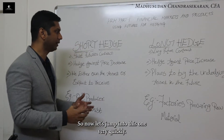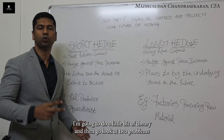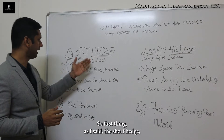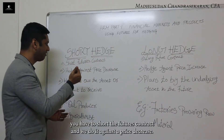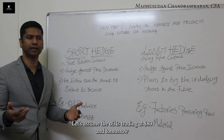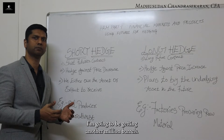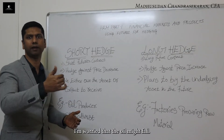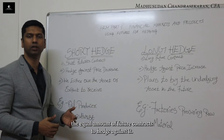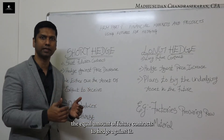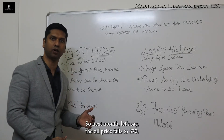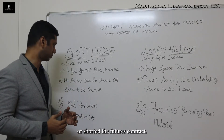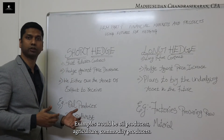Let's jump into this quickly. I'm going to do a little bit of theory and then look at two problems to explain this concept. First, the short hedge — you have to short the futures contract and we do it against a price decrease. Let's assume oil is trading at $80. In a month's timeframe, I'm going to be getting another million barrels, and I'm worried that oil might fall. In that scenario, I might go ahead and sell the equivalent amount of futures contracts to hedge against it. Examples would be oil producers and agriculture commodity producers.